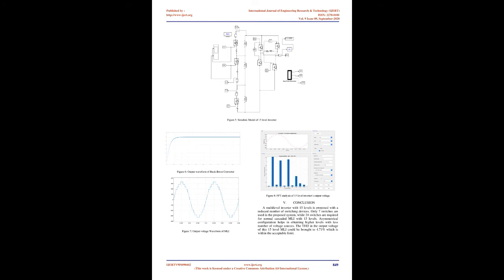For 1V, S1 is turned on. For 2V, S2 is turned on. For 3V, S1 and S2 are turned on. For 4V, S3 is turned on. For 5V, S1 and S3 are turned on. For 6V, S2 and S3 are turned on. For 7V, all of S1, S2, and S3 are turned on. The switch position for negative voltages remains the same for S1, S2, and S3, but in the H-bridge, instead of S4 and S6, S5 and S7 are to be turned on. Figure 2 shows the mode of operation in different stages and the switches that conduct during each respective mode.